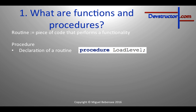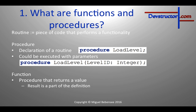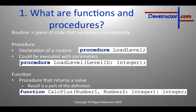A procedure could also be more complex and have some parameters, like in this example where I have a level ID of the data type integer. A function is a procedure that returns a value, and this result is a part of the definition. For instance, I have this function 'calculate plus', which needs two numbers of the base type integer and will return another integer — it will just return the result of the plus calculation. Functions are extremely useful and we will take a closer look later on.